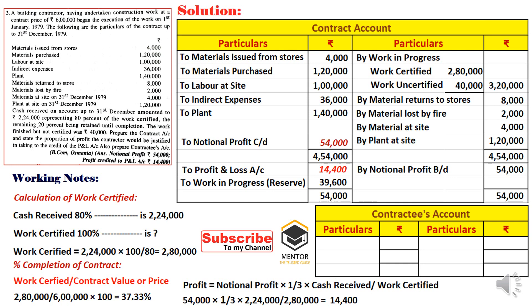We are also asked to prepare the contractee account. When cash is received, the entry is: Cash/Bank account debit to Contractee account. In the contractee ledger account, we write: by Bank 2,24,000 being cash received, then close the account with balance carried down and brought down of 2,24,000. That is the simple way to prepare the contractee account.